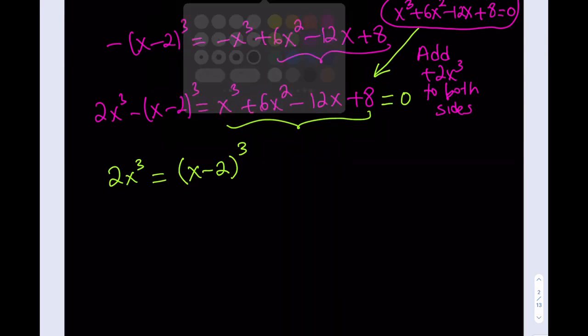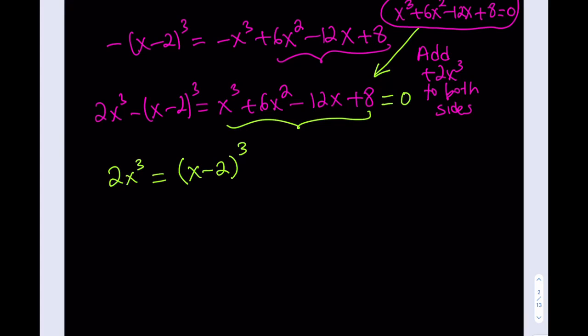Then maybe I can cube root both sides and get the x, right? Let's go ahead and do it. And what do we know about cube roots? They will not produce extraneous solutions because when you cube a positive, it's positive. When you cube a negative, it's negative. It's good. Okay, so let's go ahead and cube root both sides, and we'll proceed with that. So I'm going to cube root this one and cube root this one. And what am I going to get from here? Well, cube root of 2, what is that equal to? I don't know, but I can write it as cube root of 2. And the cube root of x³ is x, and this guy is going to be x - 2.